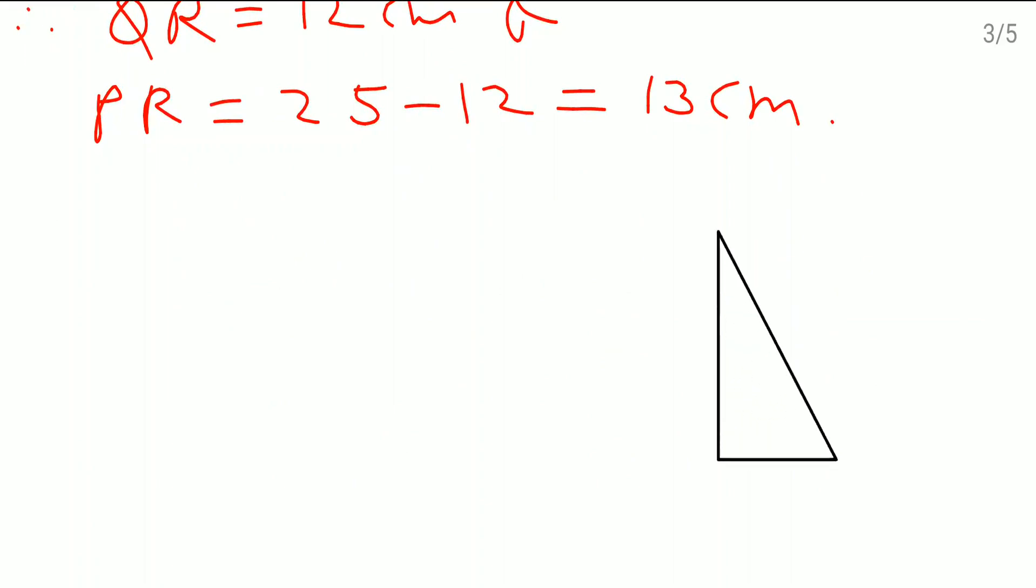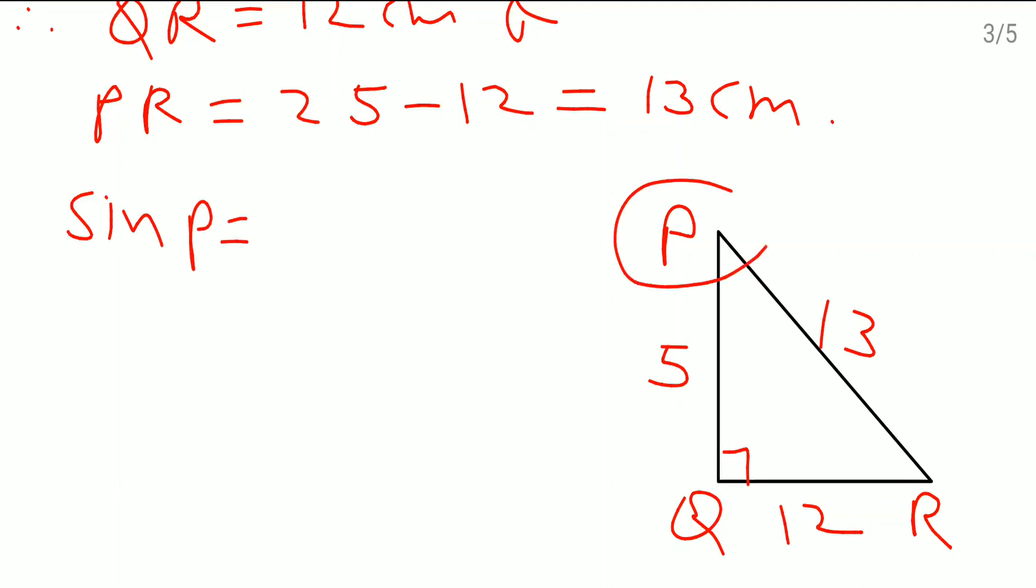Now once again I will just show you this triangle here. This one is P, Q and R. So this side is 12 cm. This is 5. This is 13. Just look at this one here. We need to find out sine P. Angle P here. So here I will write down sine P. Look at angle this one.